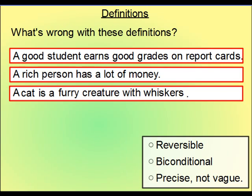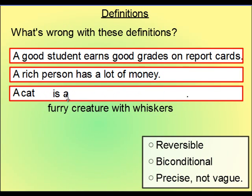And what about the third one? A cat is a furry creature with whiskers. Well, the problem with this one is that it's not reversible. Remember, a good definition can be written in reverse. Meaning that, instead of having the cat being a furry creature with whiskers. Well, this is the first part here. Cat. Second part, furry creature with whiskers. Is is our separator. So, I'm going to reverse this and then see if it makes sense.